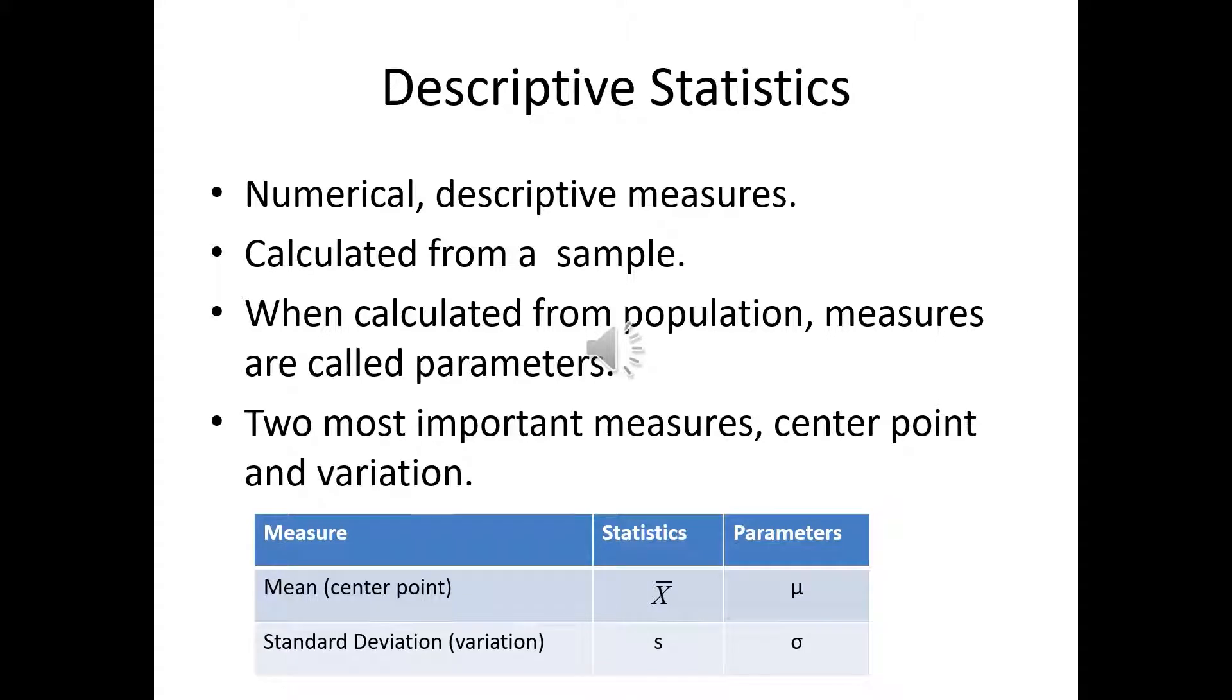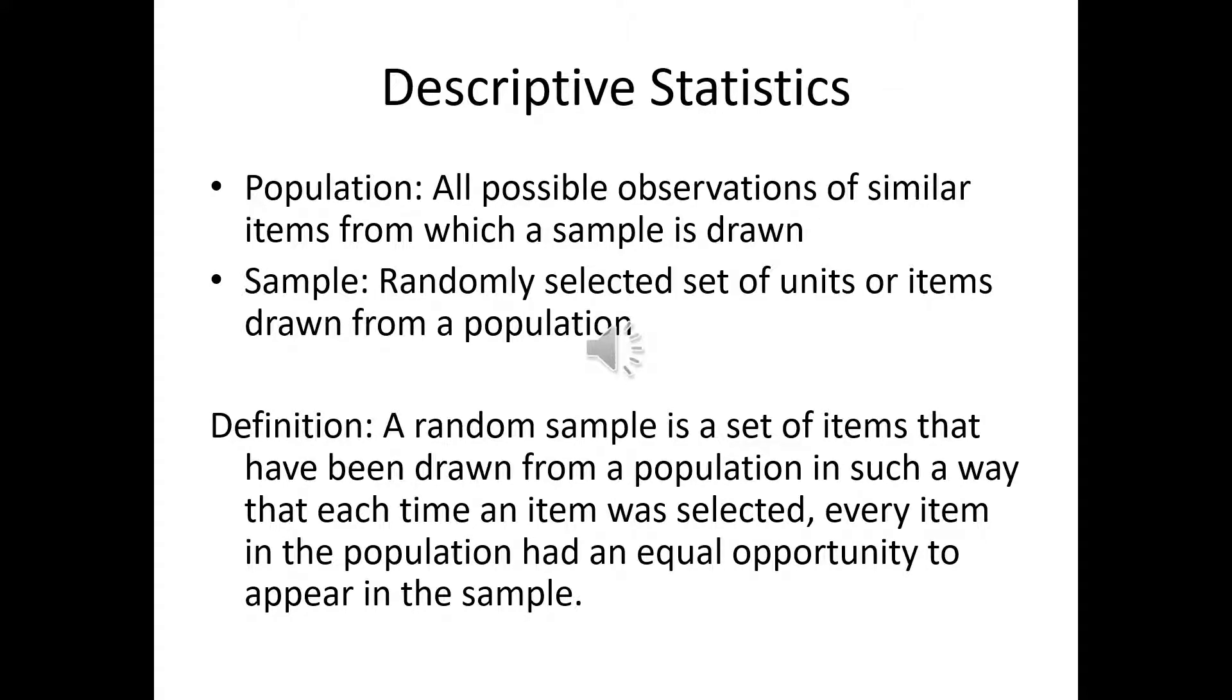There are a couple different types of statistics. There's descriptive statistics—this is numerical, they basically describe measures. Statistics calculated from a sample. A random sample is that every member of a population has an equal chance of being picked and studied. A population is the entire thing that you want to look at. If it's calculated from the population, that's a parameter. By definition, a random sample is a set of items that have been drawn from a population in such a way that each time an item was selected, every item in the population had an equal opportunity to appear in the sample.